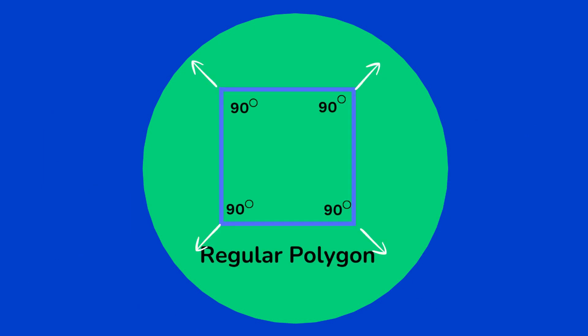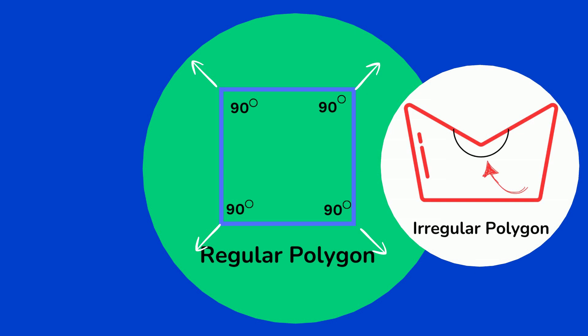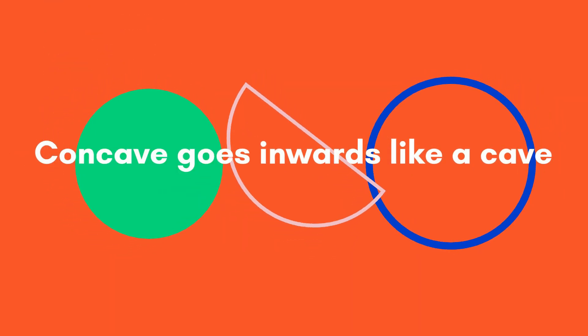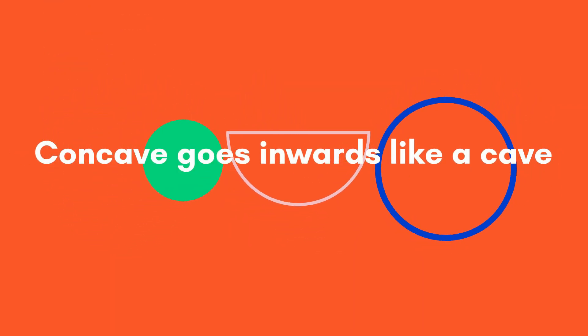With a concave polygon, it looks like one vertex has been pushed inward. It kind of looks like a cave, which is a pretty good way to remember the difference between the two.